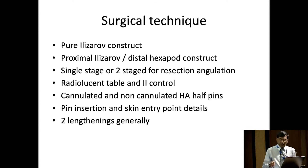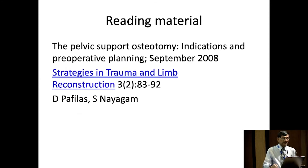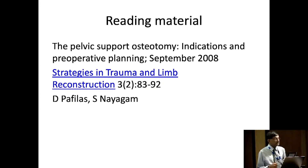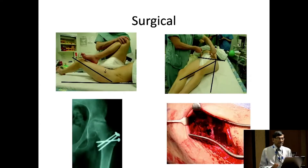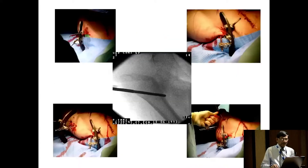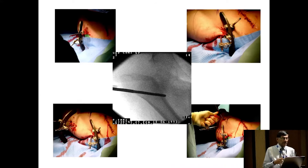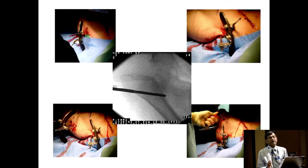Accurately placing the pin insertion sites is important. Generally, even after you do this, you may need two lengthenings. For those who want to read more on accurate indications and pre-operative planning, Dora Nayagam has published this nicely — very pictorial — in Strategies in 2008. In theater, you assess the contractures. In maximum adduction, you put the first pin. If you draw a line at right angles to the long axis and add a little bit of valgus — the original description by Dror Paley said 15 degrees, but I've moved away from that.